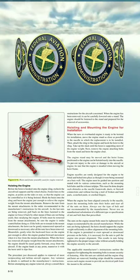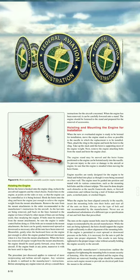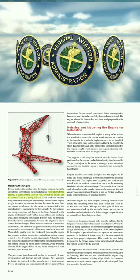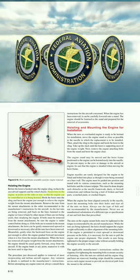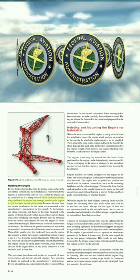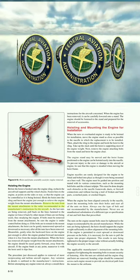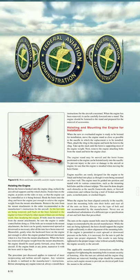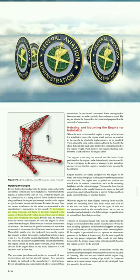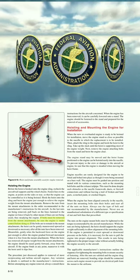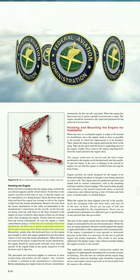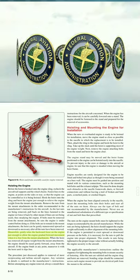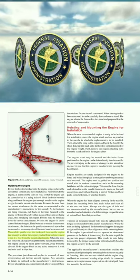Hoisting the Engine: Before the hoist is hooked onto the engine sling, recheck the aircraft tail supports and the wheel chocks. Fasten lines to the engine at points on the sides or rear so that the engine can be controlled as it is being hoisted. Hook the hoist onto the sling and hoist the engine just enough to relieve the engine weight from the mount attachments. Remove the nuts from the mount attachments in the order recommended in the manufacturer's instructions. As the last nuts are being removed, pull back on the lines fastened to the engine to steady it. If bolts must be removed from the mount attachments, be sure the engine is under control before doing so.